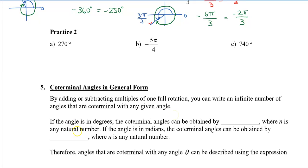So if the angle is in degrees, the angles can be obtained by adding or subtracting 360 degrees. Now because we can add lots of them, we can add once around, twice around, three times around, four times around, etc. We can say this is 360 degrees times n, depending on how many times we want to rotate. And it's going to be a natural number, meaning that it's 1 and higher.